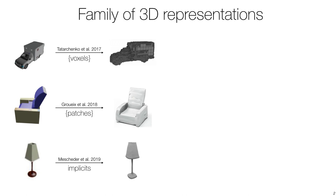There are a variety of 3D shape representations that can be used in deep learning, including voxel grids, surface patches, and implicits.